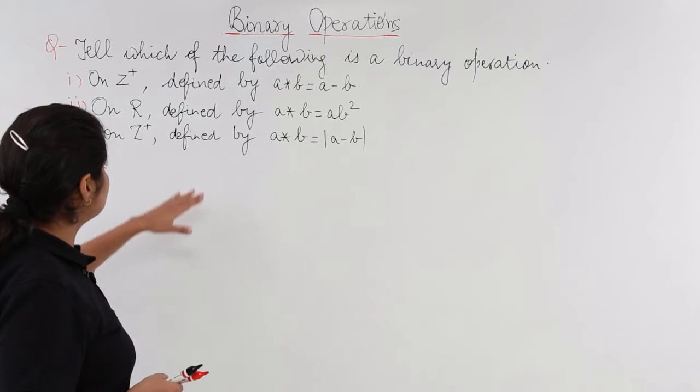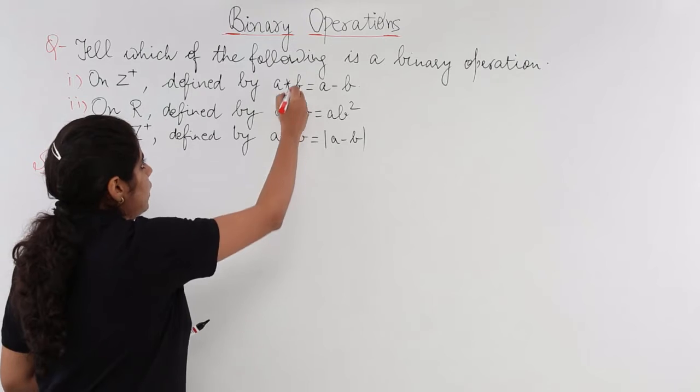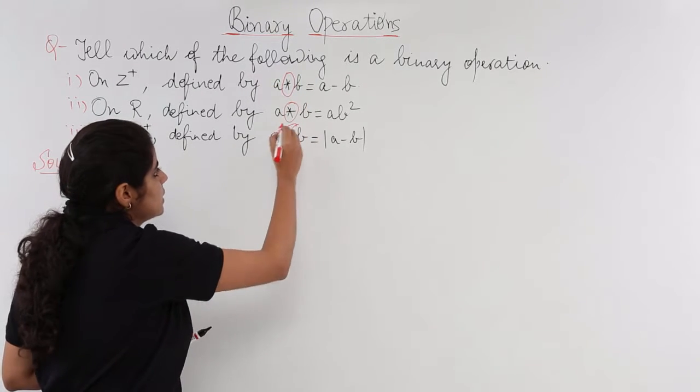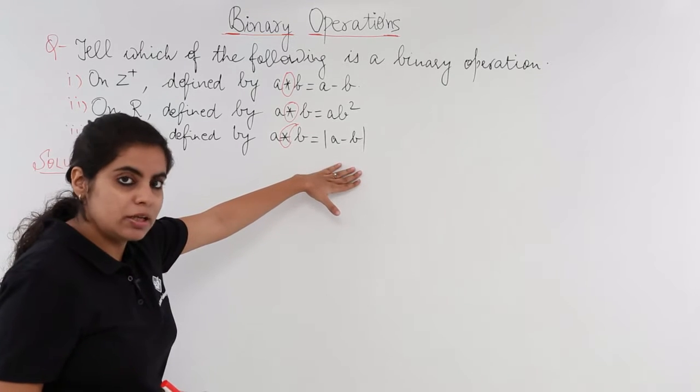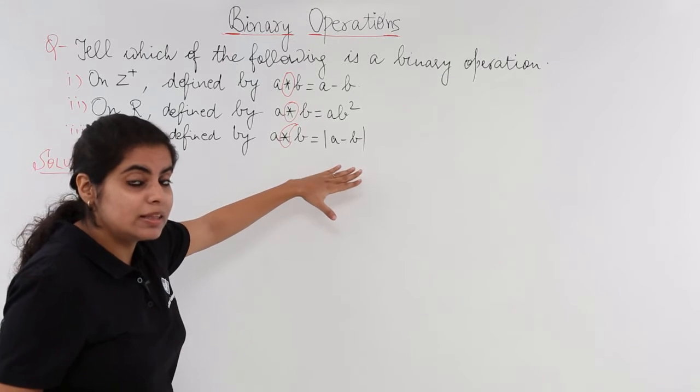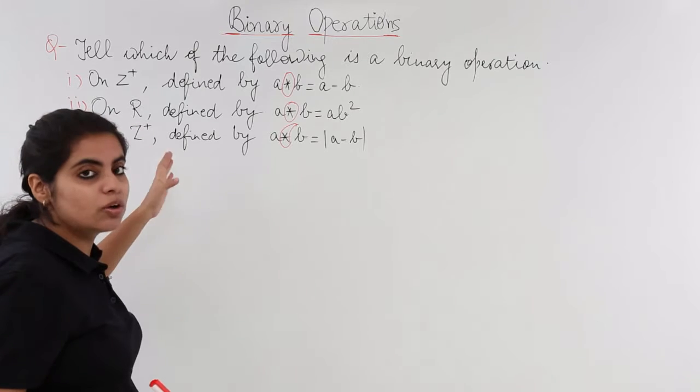So the question would be given like this only. You will have star which is a binary operation. You know all these asterisk signs here are binary operations. The other thing that the definition will be given here, definitely it will be given here. Also one thing else will be there: you have to see what is the domain or the range.